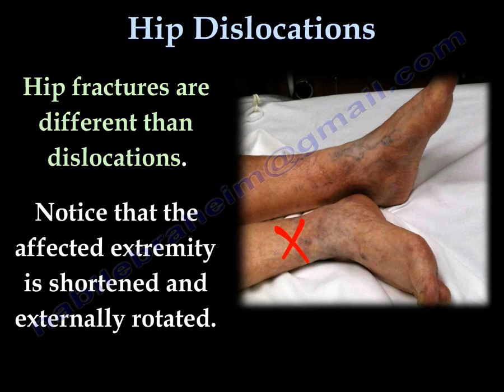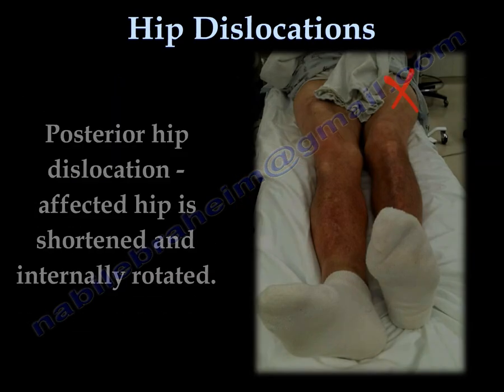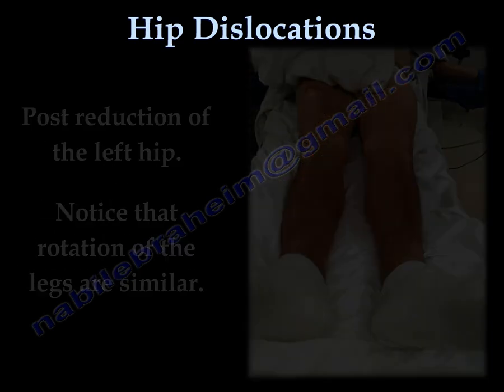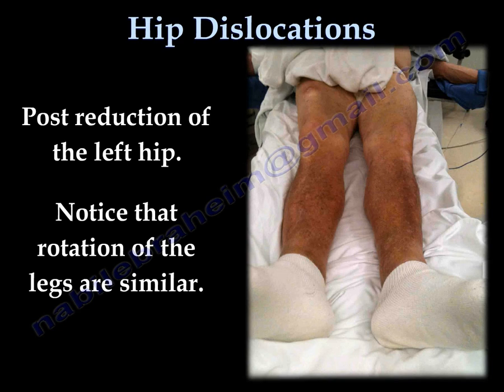Hip fractures are different from hip dislocation. In a hip fracture, the affected extremity will be shortened and externally rotated. This patient had a posterior hip dislocation — note that the affected extremity is shortened and internally rotated. After reduction of the left hip, notice that rotation of the legs are similar.